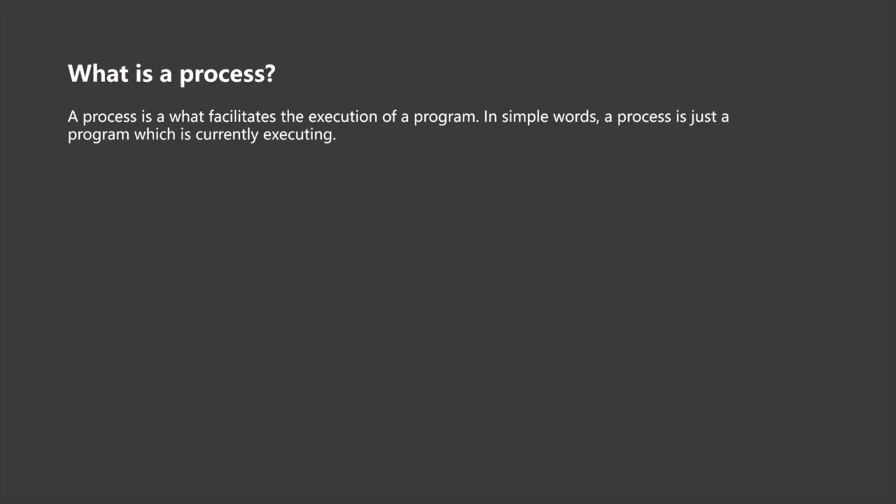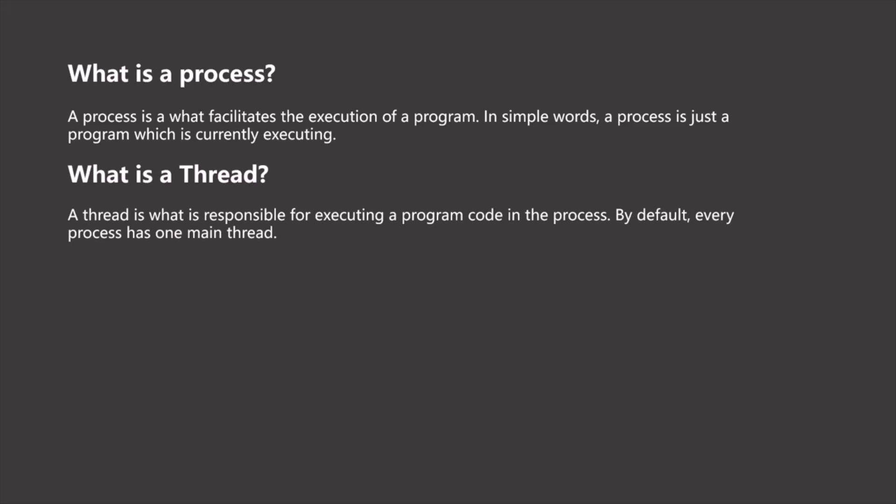We already learned that Node.js is basically a C++ program. So when we run a Node.js application, a process is created which facilitates the execution of that Node.js program. That means a node process will be opened for that node application, which will run on the computer. We can actually access this process from our Node application using a process variable, and we are going to use it later in this course. Every process has, by default, a single main thread which is responsible for executing the program code in the process.